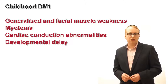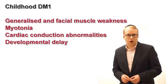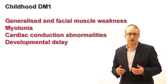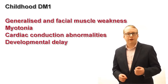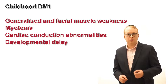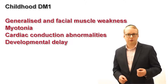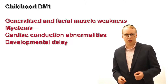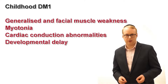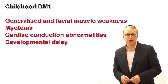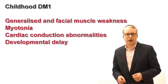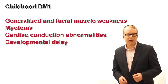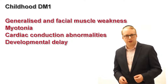In childhood onset DM1, the diagnosis is often harder to make, though facial weakness and myotonia are often present, as are cardiac conduction abnormalities. Both congenital and childhood forms affect the brain and lower intelligence.